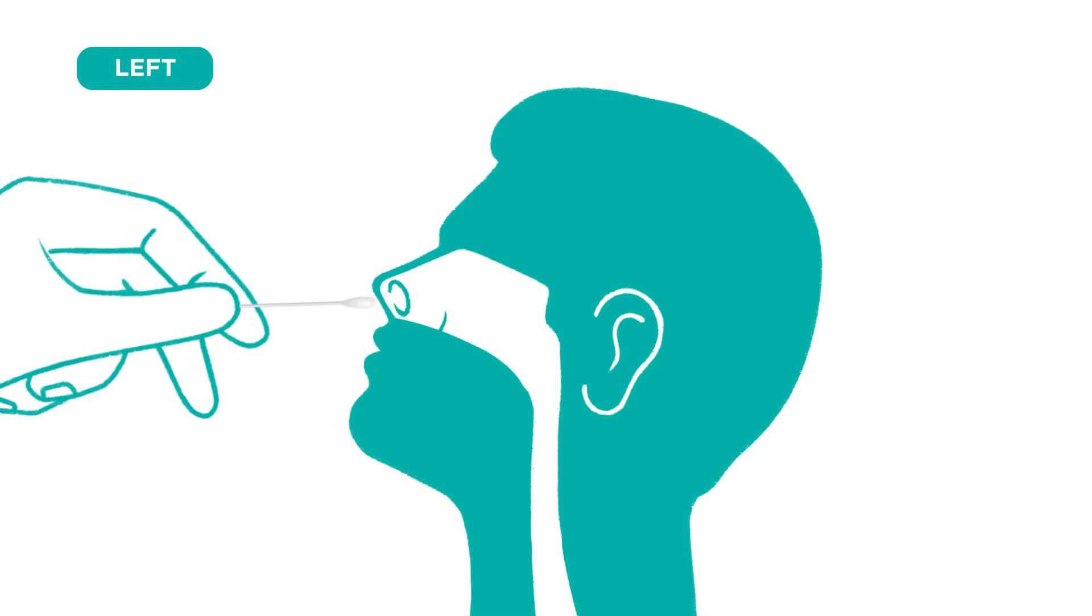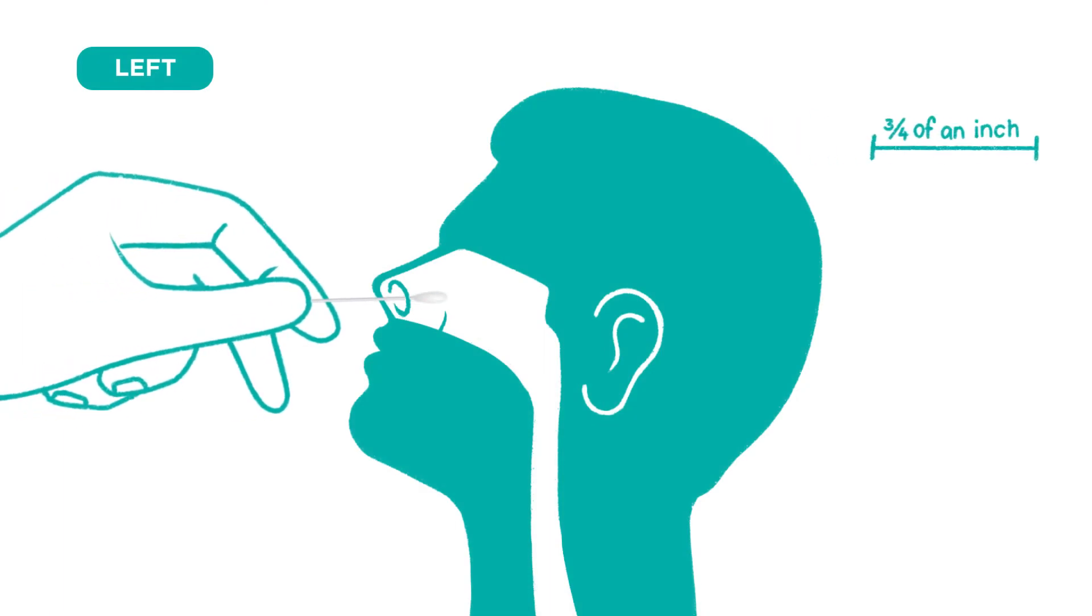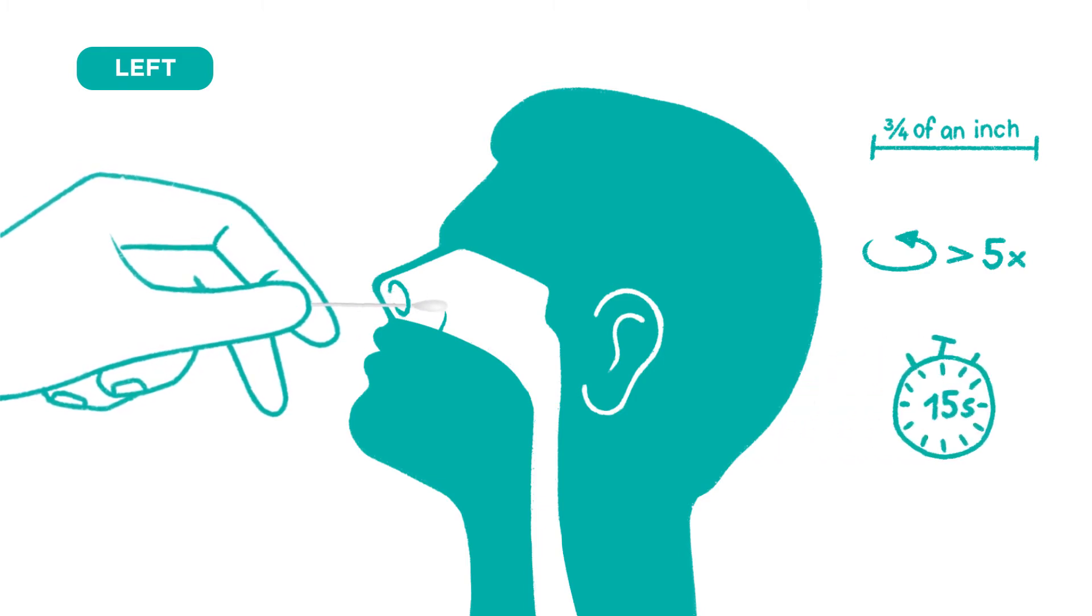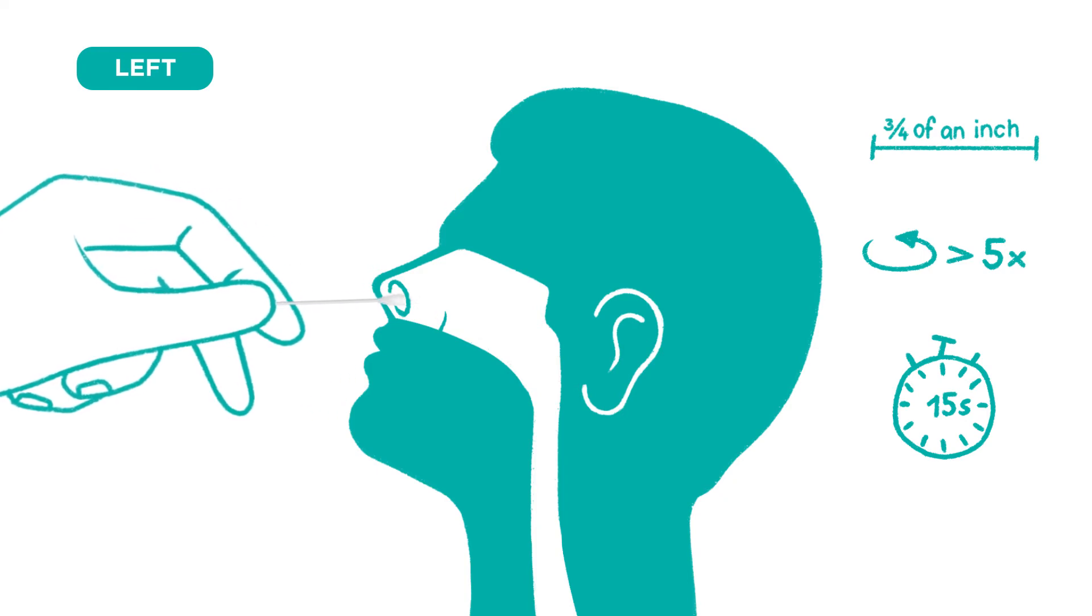Gently insert the swab no more than three-quarter inches or two centimeters into the left nostril. Then slowly rotate the swab at least five times in a circular path for 15 seconds. Once complete, carefully remove from the left nostril.